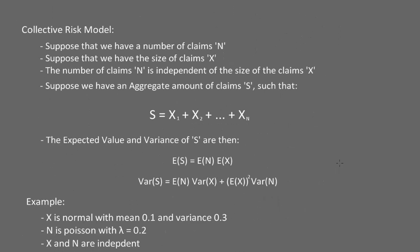The next concept is the collective risk model. Suppose the number of claims is N and the size of claims is X, and N is independent of X. We want to find the aggregate claims S, where S equals the sum of X_i for i from 1 to N. It can be shown that E[S] = E[N]·E[X], and Var[S] = E[N]·Var[X] + E[X]²·Var[N].